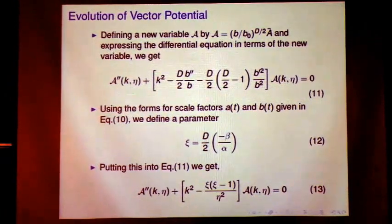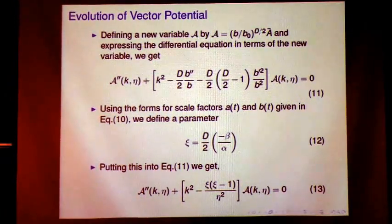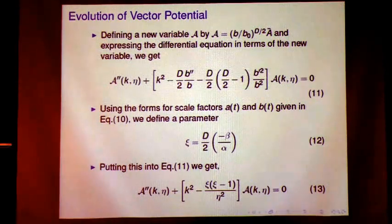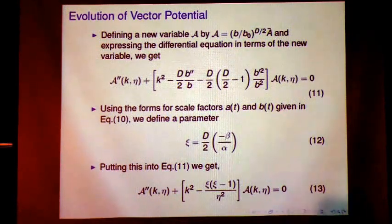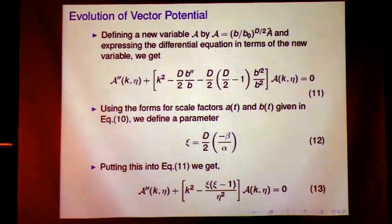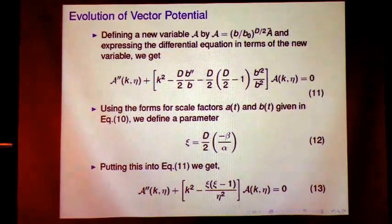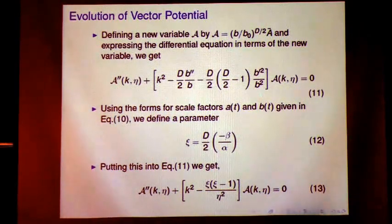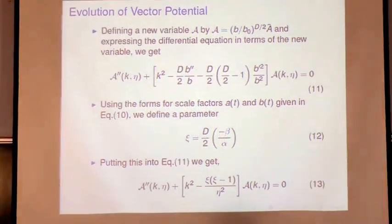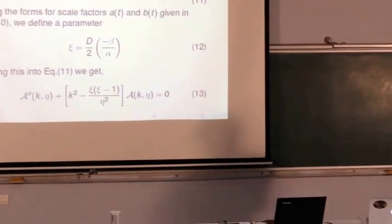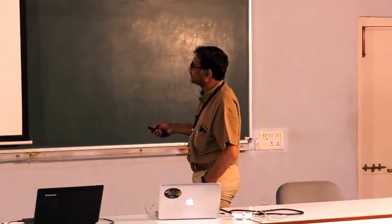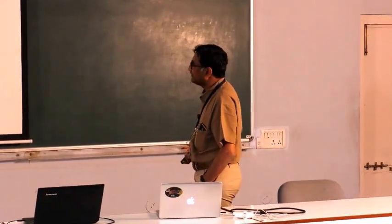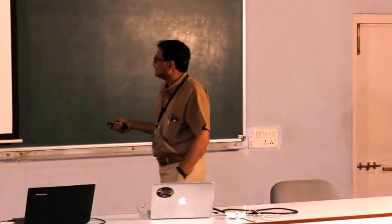So this script A is related to the scale factor A times the vector potential and one can write the evolution of script A in this form, because the script A is the one which will ultimately be used in calculating the magnetic power spectrum. Now, here we find that there is this K square piece and this piece and clearly, if suppose this term is negative, then we have growing solutions for script A. If this bracket term, if suppose this portion is greater than K square, we will have that.